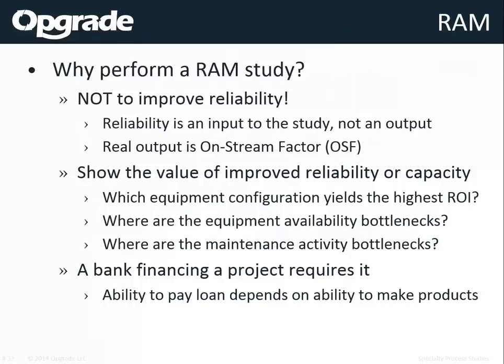That single number is based on a million different assumptions. The real value isn't in that one number — it's in changing one assumption, such as the capacity of one piece of equipment, and seeing the output go from 95.23% to 95.33%. That change gives you high-confidence knowledge of the value of that specific improvement.